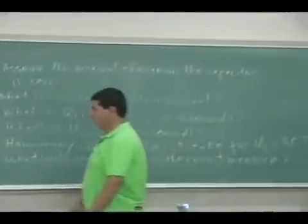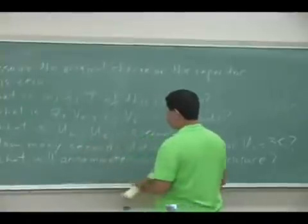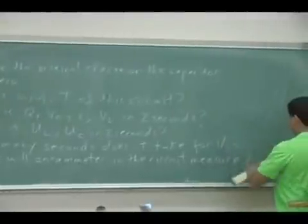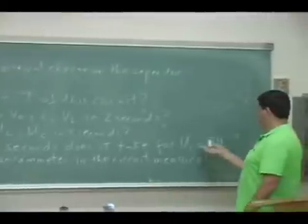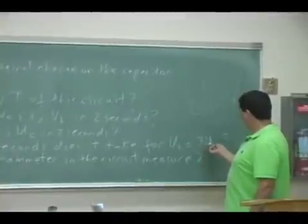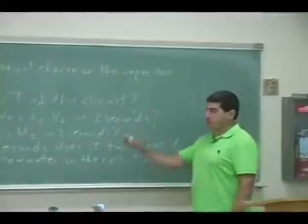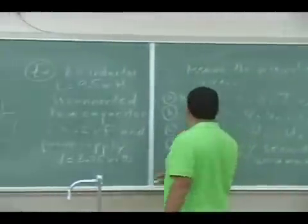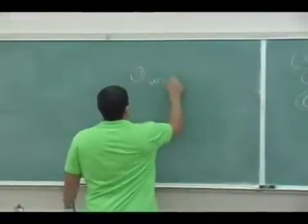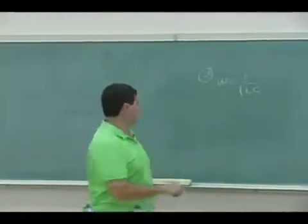How many seconds does it take for Ul to equal three times Uc? The Ul is the energy stored in the inductor, the Uc is the energy stored in the capacitor. And what will an ammeter in the circuit measure if I place an ammeter in that circuit? Let's start with the first part A. We derived this equation: omega equals one over square root of LC.